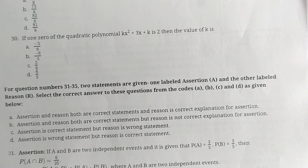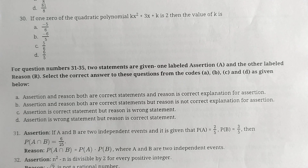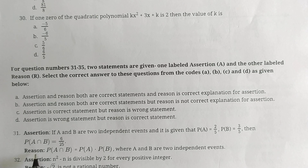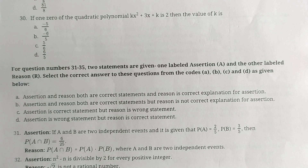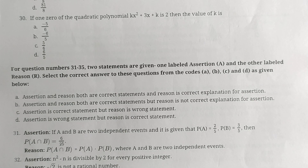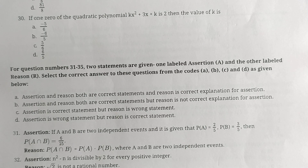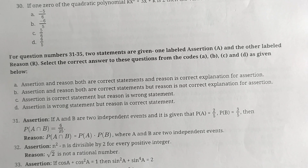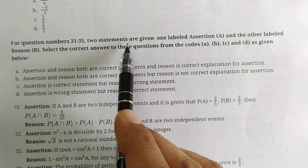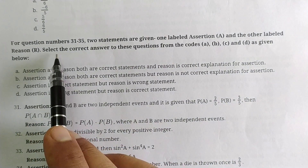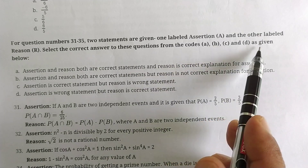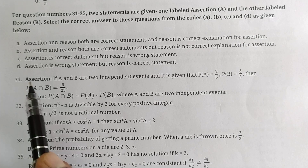Now the next questions are assertion and reason. This is the first time assertion and reason is introduced in the math subject. Assertion means we are given a fact, and reason means the reasoning behind it. For example, two is a prime number because it has only two factors — two is the assertion (fact) and having two factors is the reason. For questions 31 to 35, two statements are given: one labeled assertion (A) and the other labeled reason (R). Select the correct answer from options A, B, C, or D.